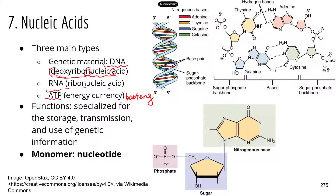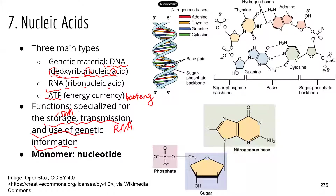When the chemical bonds in ATP molecules are broken, energy is released and cells can use that energy to perform different functions. The general functions for nucleic acids are storage, transmission, and use of genetic information. Storage of genetic information is really about DNA — DNA is the genetic blueprint. Transmission and use of genetic information is more about RNA, which performs a critical role in transcription and translation.